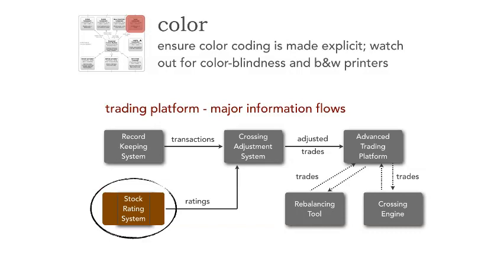You see this stock rating system — why is that orange? No reason at all, I just happened to choose orange. When you're choosing colors, make sure there's a reason for doing that. Also watch out for color blindness. My favorite color when doing diagrams is blue, and there are two reasons: most colorblind people can see blue or shades of blue, and when you print on a black and white printer, blue turns out best in terms of shades of gray.